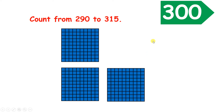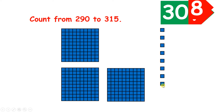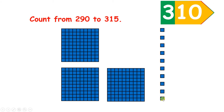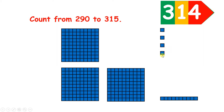So now we can count on: 301, 302, 303, 304, 305, 306, 307, 308, 309, 310 — because we can regroup 10 units to make a ten — 311, 312, 313, 314, and 315.